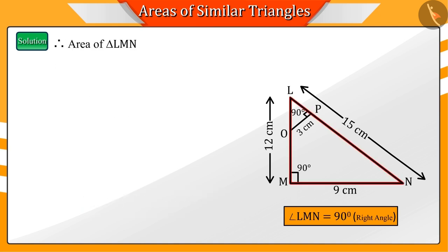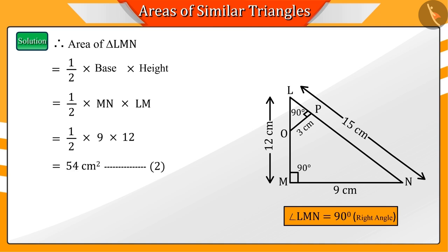Since we have to find the area of triangle LMN, therefore, by placing the values of LM and MN in the formula, area of triangle LMN is 54 square centimeters.